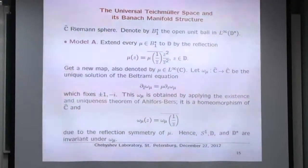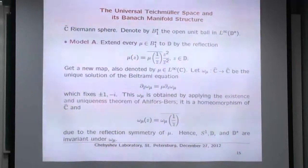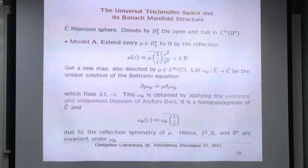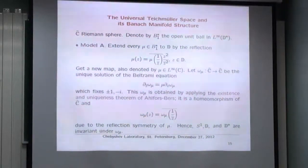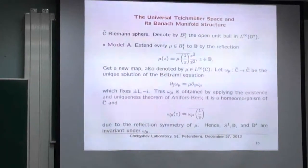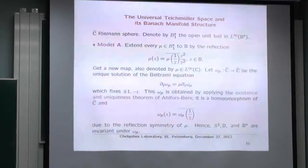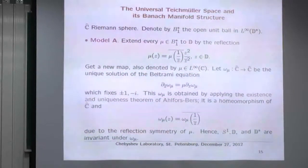Finally, the hero: what is the universal Teichmüller space? B¹(D*) is the open unit ball in L∞(D*). I extend μ by reflection in the circle, still call it μ, and solve the Beltrami equation. I fix the points +1, −1, and −i traditionally. ω^μ is obtained by applying the famous Ahlfors-Bers existence and uniqueness theorem, which guarantees a solution when μ is an L∞ coefficient. The solution is symmetric relative to reflection in the circle, and S¹, D, and D* are invariant under ω^μ.